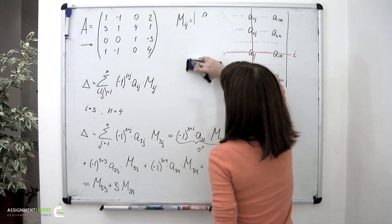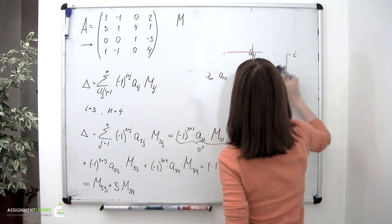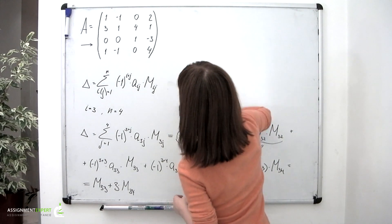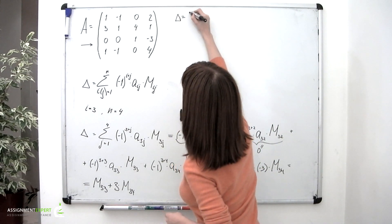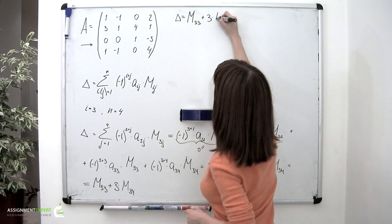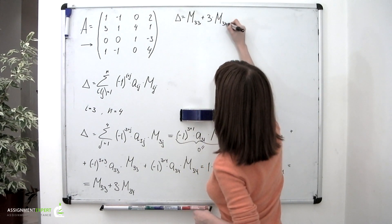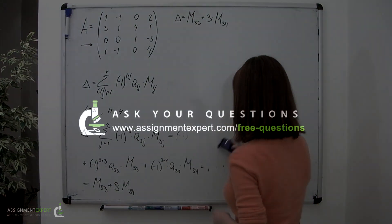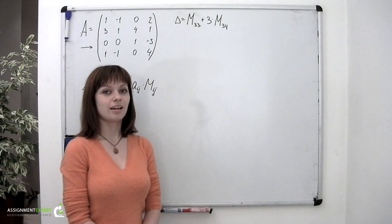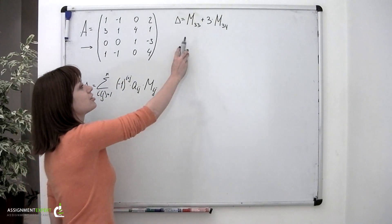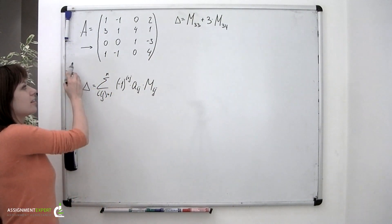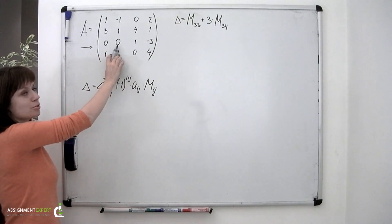I'll write that down separately: delta equals M sub 3,3 plus 3 times M sub 3,4. As you can see, we only need to calculate two minors — M sub 3,3 and M sub 3,4 — instead of four. That is because we picked the row containing two zeros.